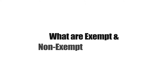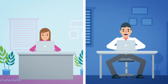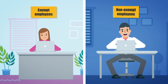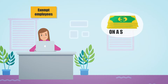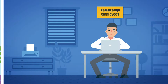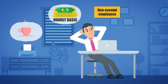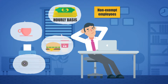What are exempt and non-exempt employees? There are two types of employees: exempt employees and non-exempt employees. While exempt employees are usually paid on a salary and are not eligible for overtime pay, non-exempt employees are typically paid on an hourly basis and are entitled to rest breaks, meal breaks, and overtime pay.